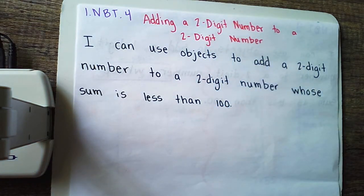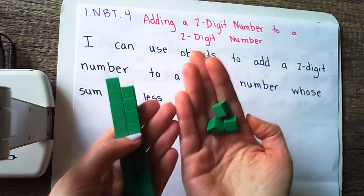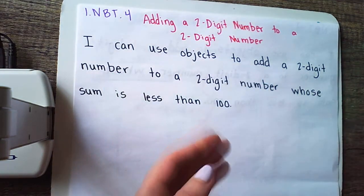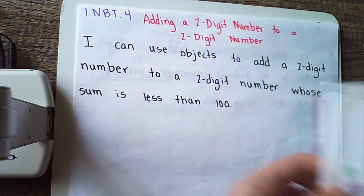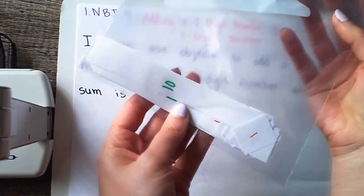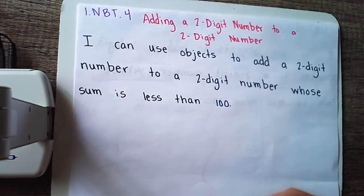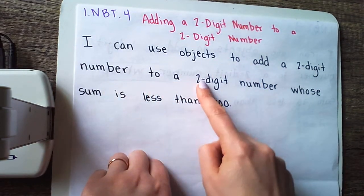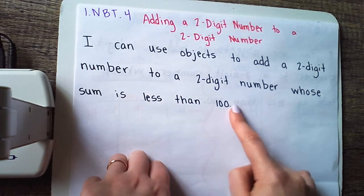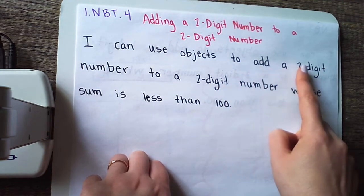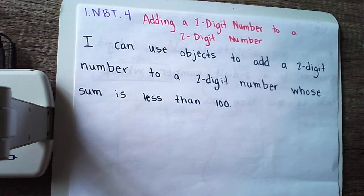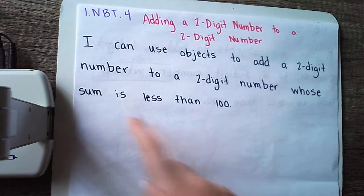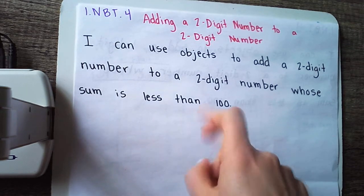Similar to yesterday, we're gonna make sure that we can do this with objects. I have base 10 blocks and ones that I'm gonna be using to show you how to do this, but feel free to use the manipulatives that you might have made yesterday or any other creative manipulatives and objects you have around the house. We're using objects to add a two-digit number to a two-digit number whose sum is less than 100, meaning each of those add-ins are gonna have a tens place and a ones place, and when we add them together the sum is going to be less than 100.